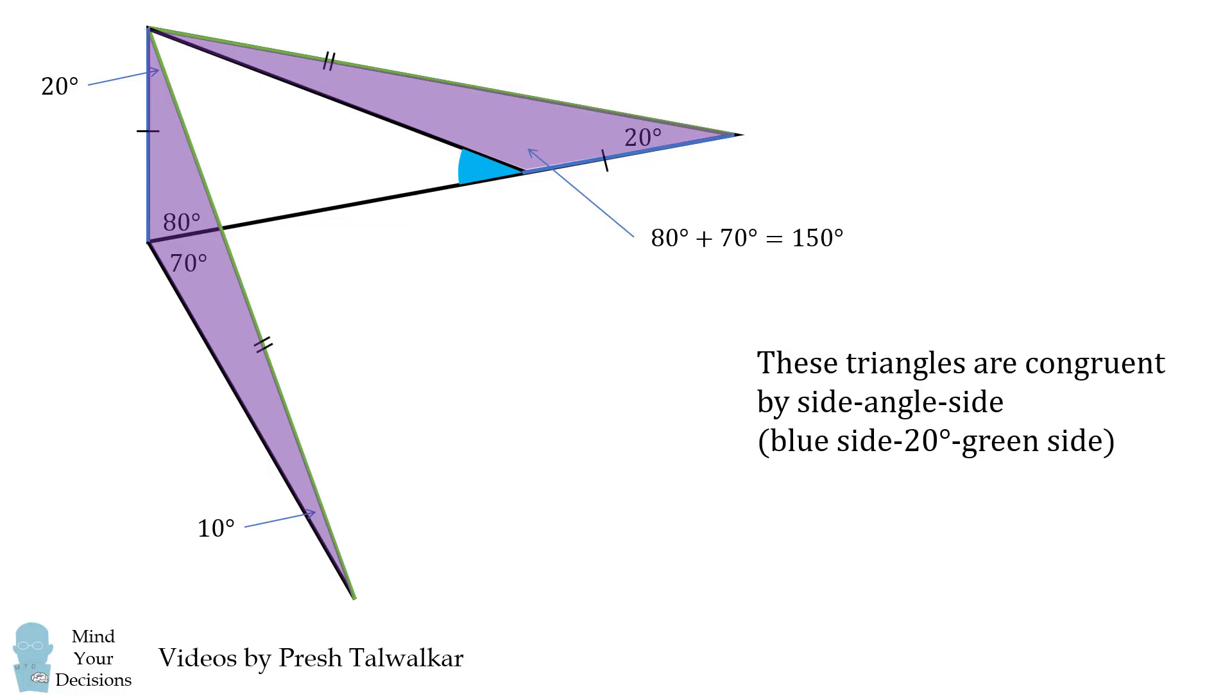Finally, we can solve for the angle that we want to. This will be equal to 180 minus 150 which is 30 degrees. And that's it. Did you figure it out?